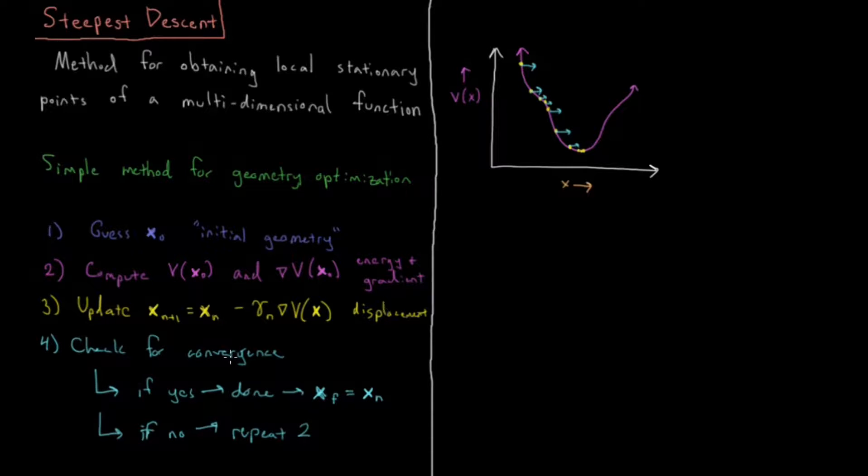So if we meet all those specified criteria, then we are done. And our geometry is our final optimized minimum energy, local minimum structure. If not, we repeat step two, and we keep going in a cycle of steps two, three, and four, until we finally get to our specified convergence.